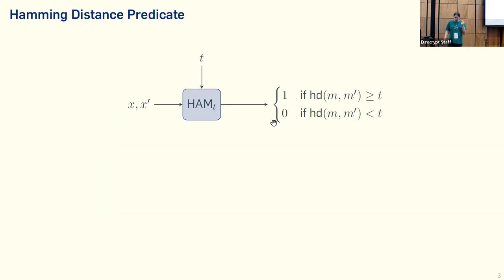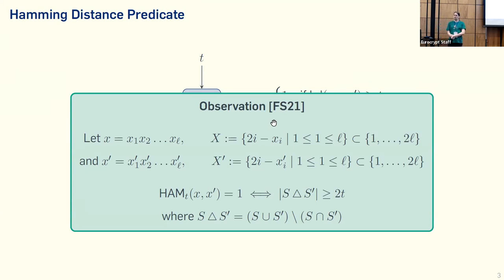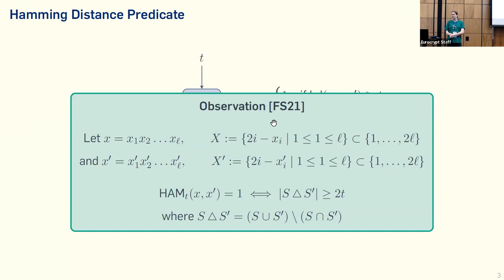We didn't really know how to construct this directly, so we used an observation from a previous paper also by Mark and me from Eurocrypt 2021: a connection between Hamming distance and the symmetric set difference of sets. Basically, if we have two strings X and X prime, we can define a set where for each bit position we have two possible values to put into the set. The evaluation of the Hamming distance predicate being one is equivalent to the fact that the size of the symmetric set difference of the two sets is greater than or equal to 2T.